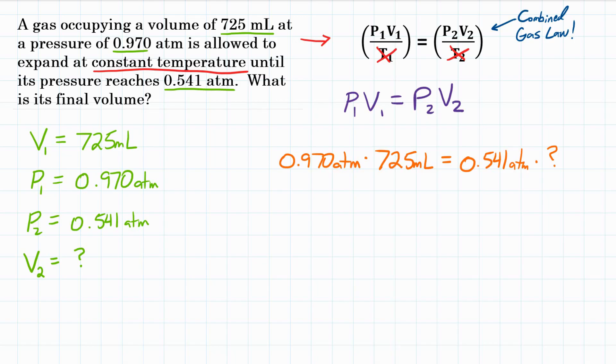Now, we can isolate our variable, and to do that we're going to divide each side by 0.541 atmospheres. And we're doing this because on the right side where we have our unknown, we're going to get rid of everything over here. Because on top and on bottom is both 0.541 atmospheres, so they're going to cancel out.